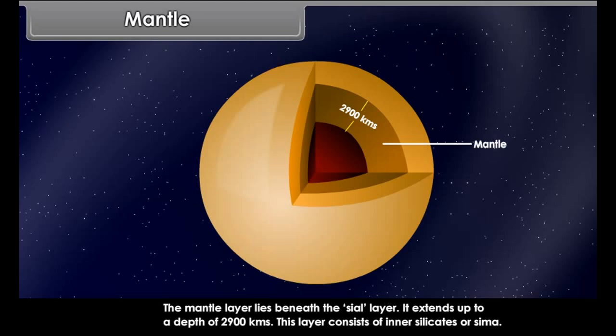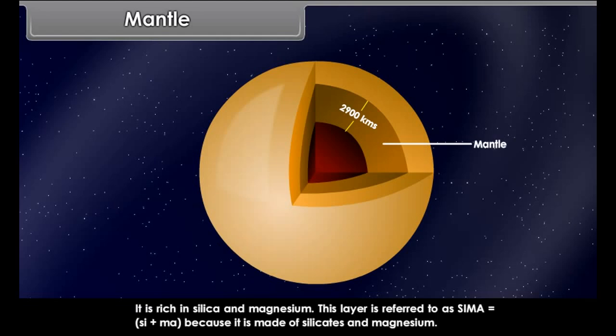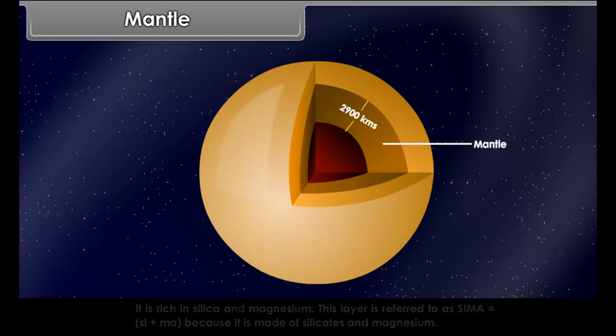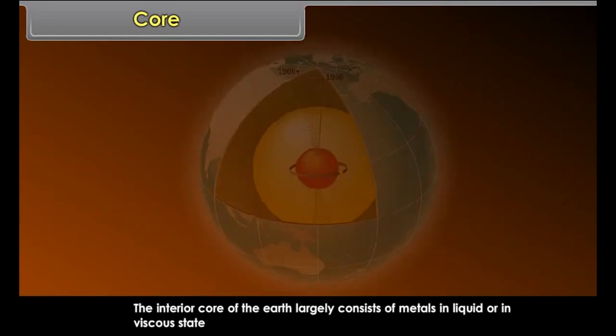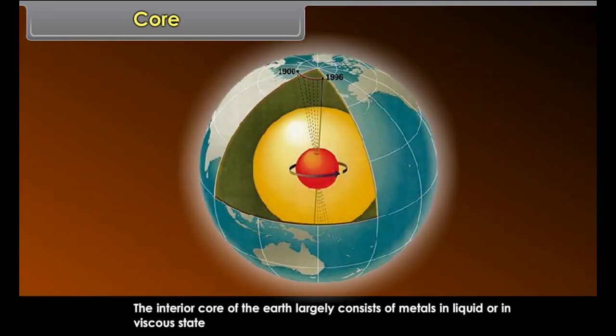Mantle. The mantle layer lies beneath the Sial layer. It extends up to a depth of 2,900 kilometers. This layer consists of inner silicates, or Sima. It is rich in silica and magnesium. This layer is referred to as Sima — Si plus Ma — because it is made of silicates and magnesium. This is a transitional zone of mixed metals and silicates.